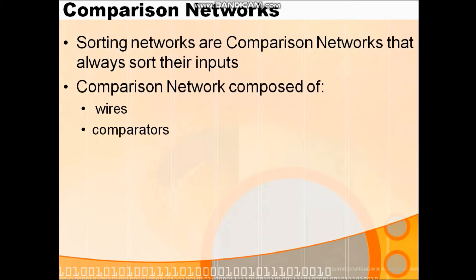We will first see the comparison network and what components are required for it. The components required are wires and comparators, because they are implemented in hardware. We require n number of wires and n number of comparators. Sorting networks are comparison networks — a comparison network also called a sorting network always sorts its input. Whatever unsorted input we have, we sort it using the comparator and get a sorted output.